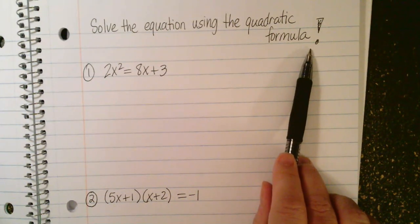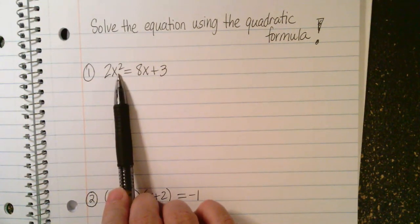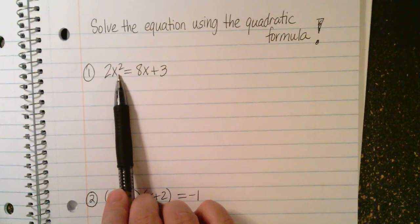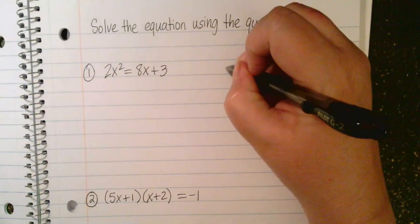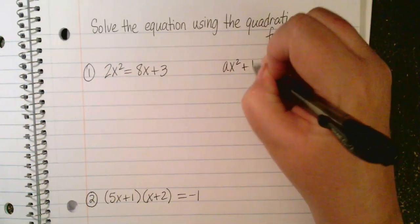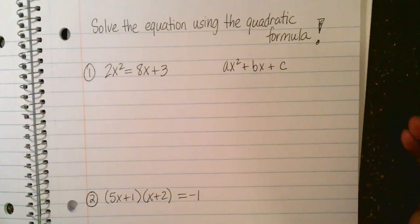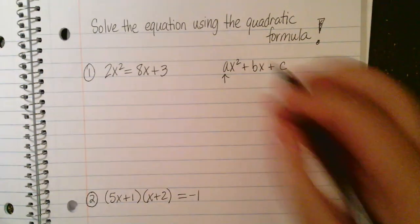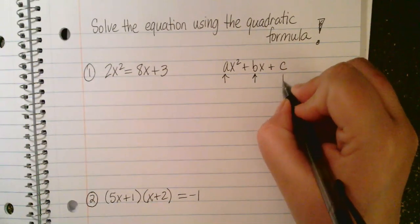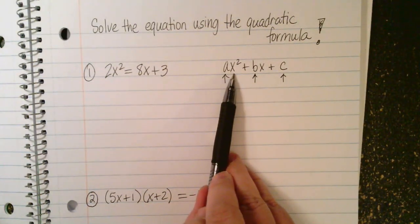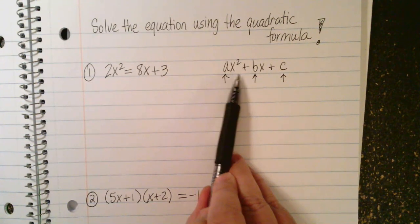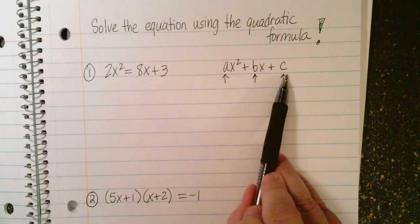First of all, these are both quadratic equations, meaning the biggest exponent, the biggest power of x is 2. We have an x squared. So that makes it a quadratic equation. Quadratic equations, we like to look at them in standard form. Quadratic expressions, really, we like to look at in this form, even if it's not an equation, even if you don't have equal something. That allows us to identify an A, a B, and a C here. A is the coefficient of the x squared term. B is the coefficient of x. And C is the constant.